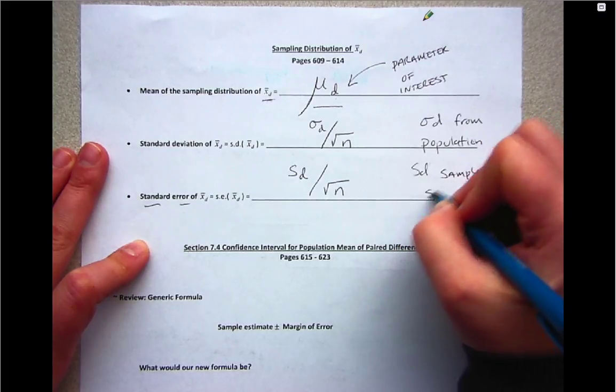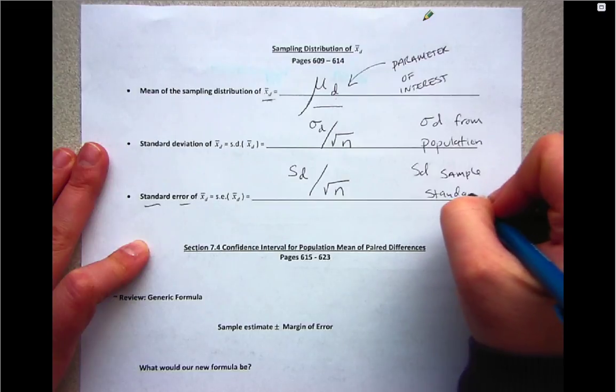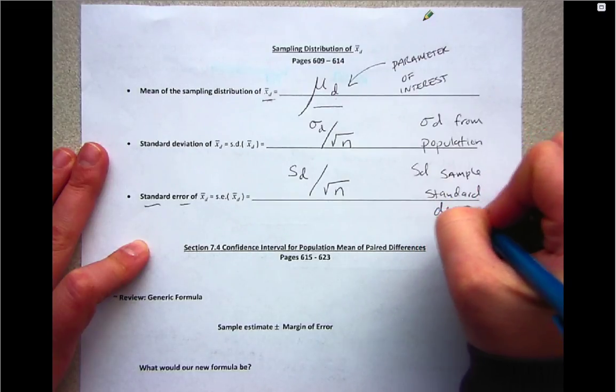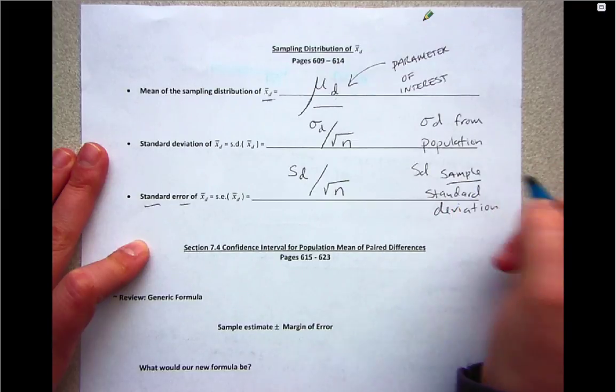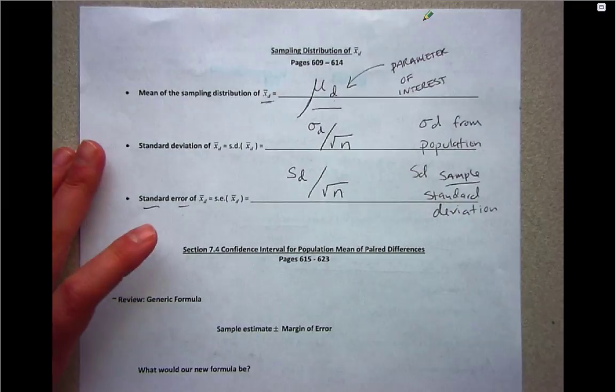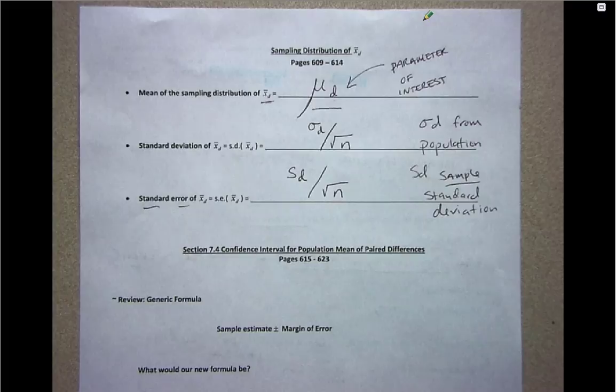So we make that transition because we won't know information on the population, but we will know information on the sample. So this is a good estimate of sigma sub d, or the standard deviation of the sampling distribution.